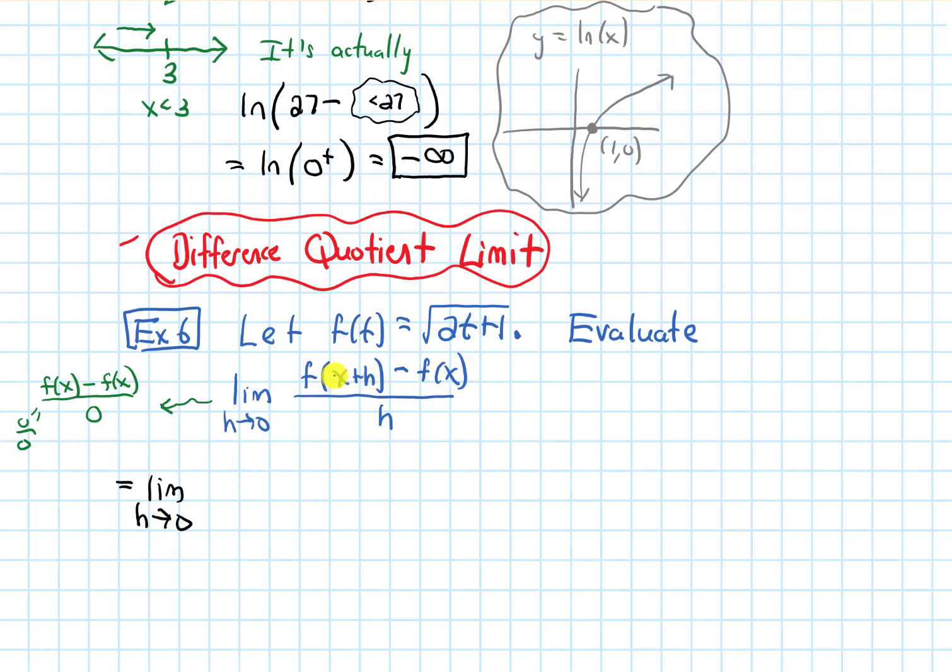f of x plus h means, well, whatever's in parentheses, plug that in for my variable. In this case, plug it in wherever t is. So I'll get the square root of 2 times x plus h, getting plugged in for the t, and then plus 1, minus f of x. So this time I plug in x for my variable. So I get the root of 2x plus 1, and then all over h.